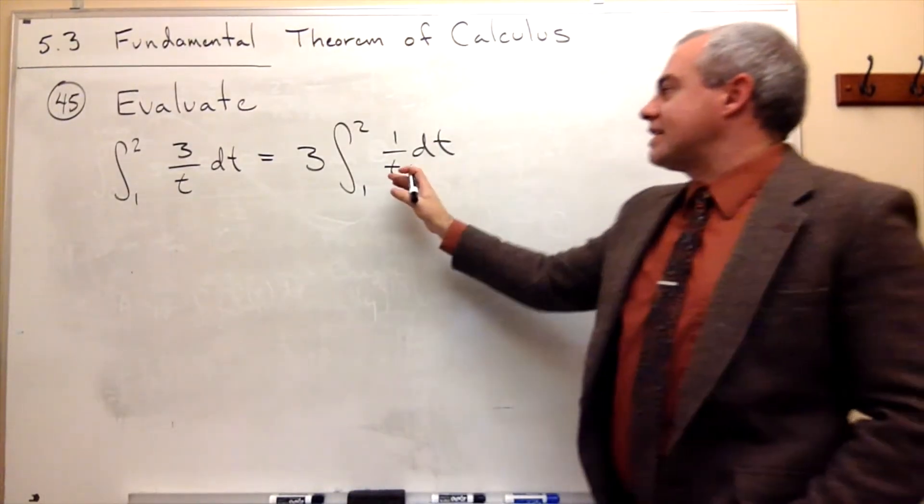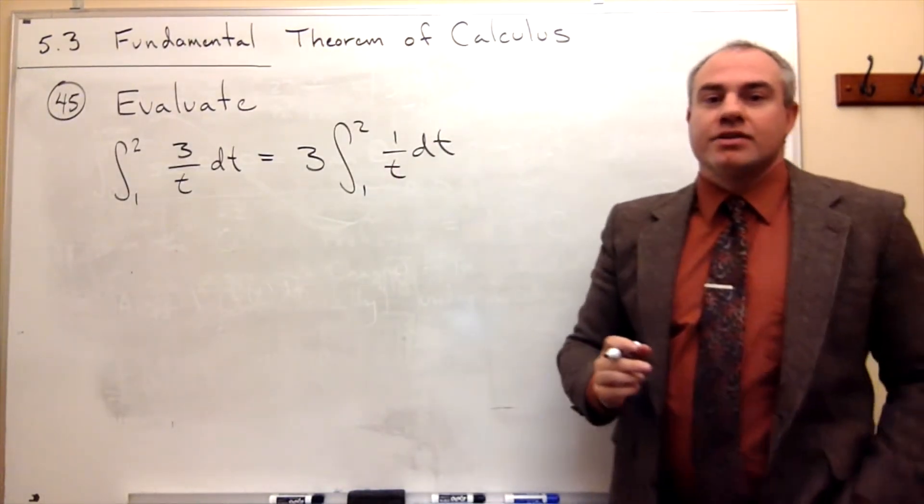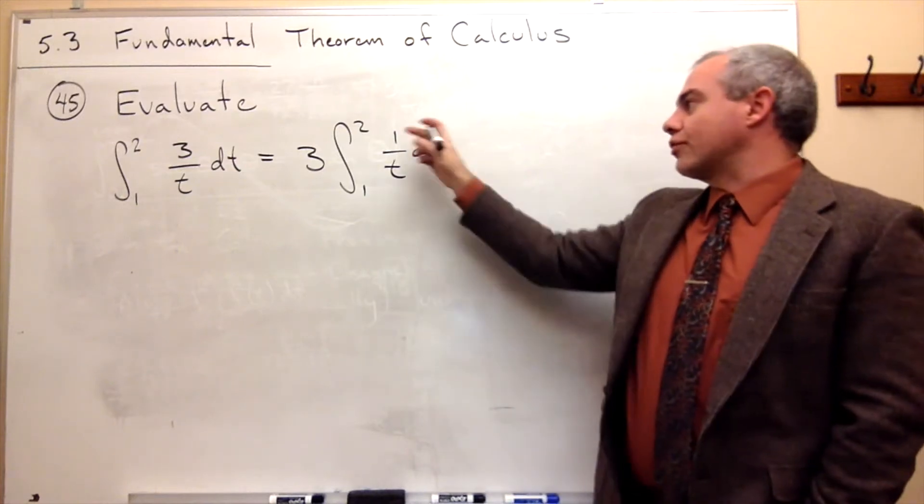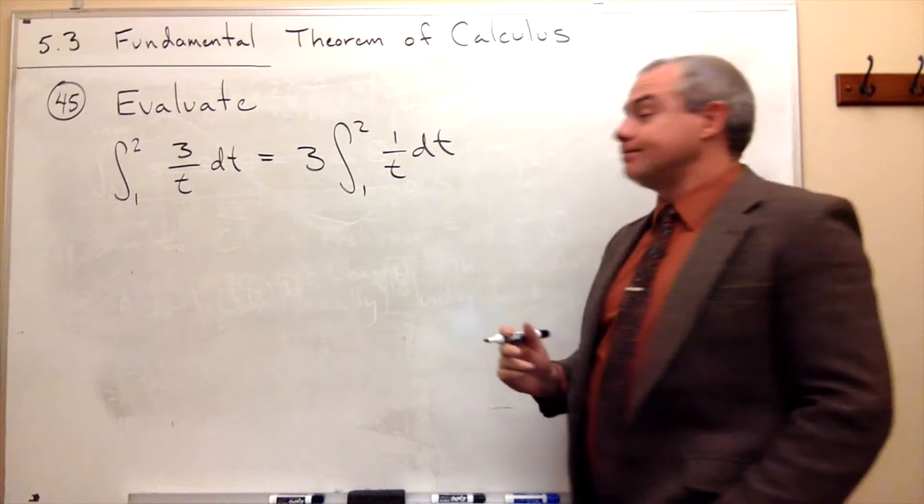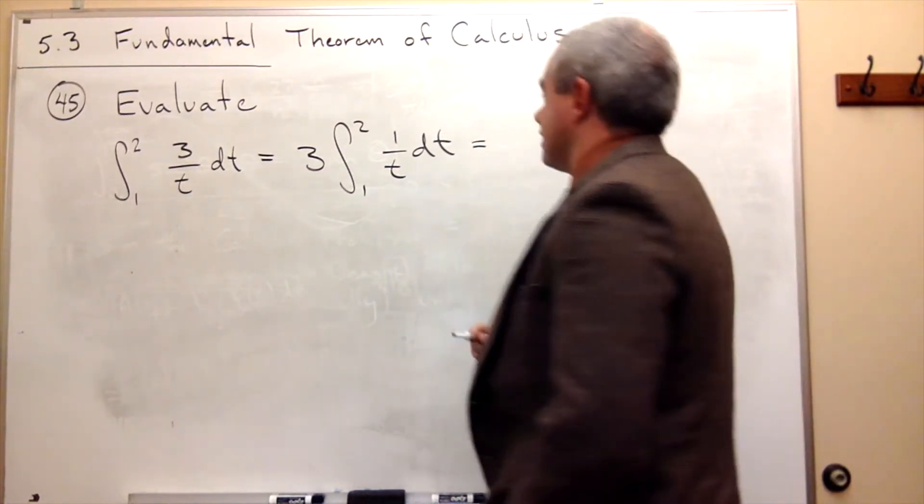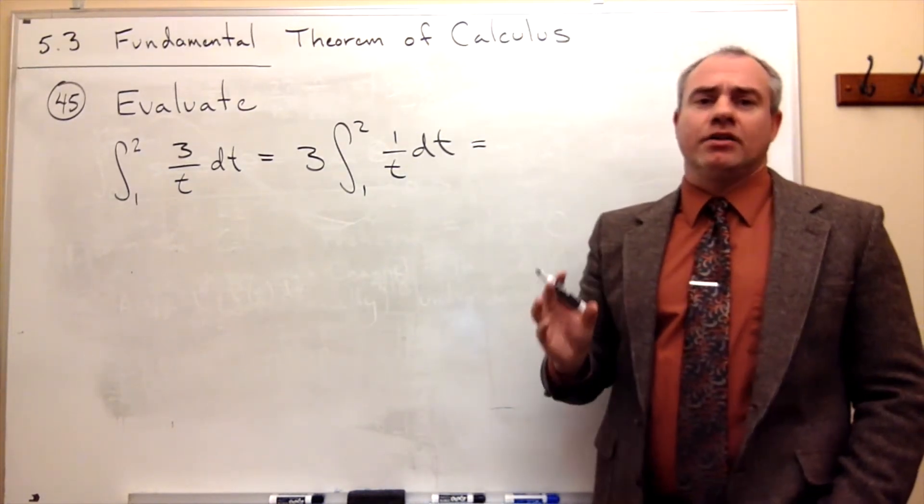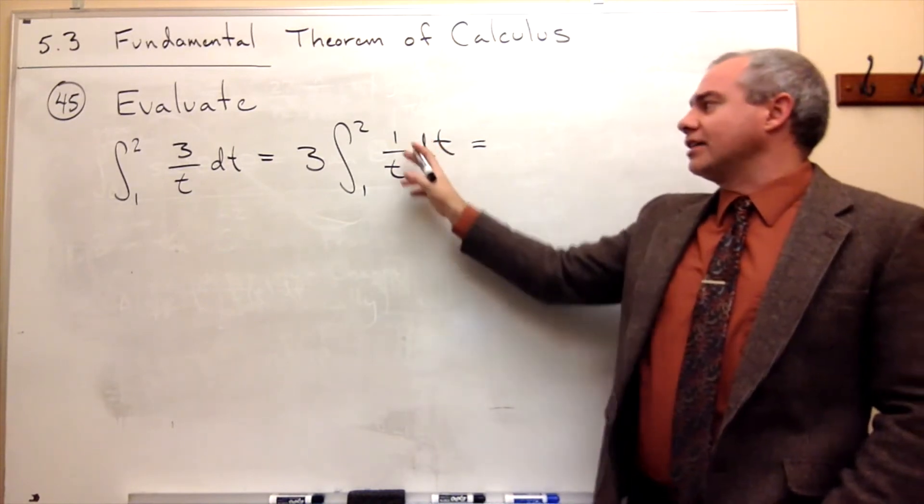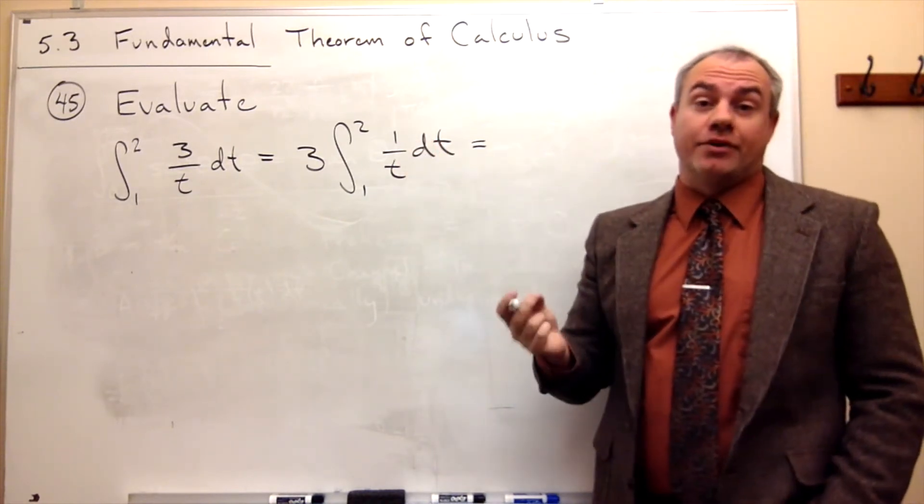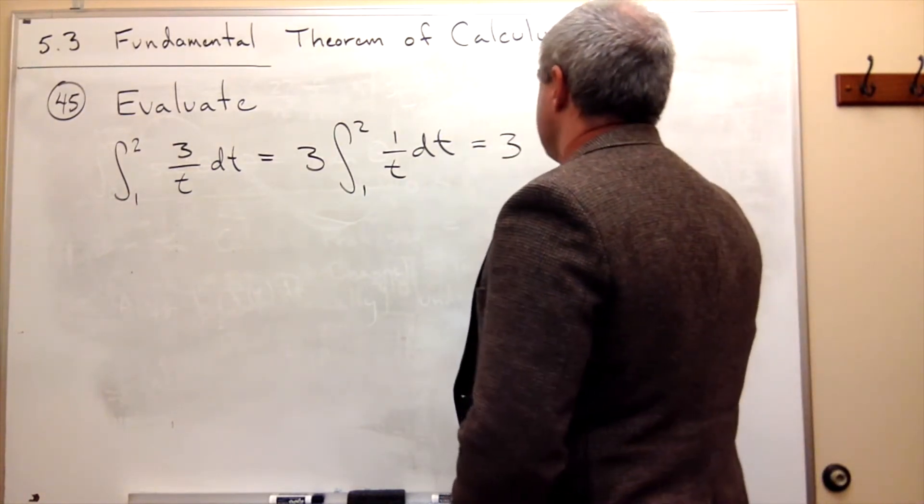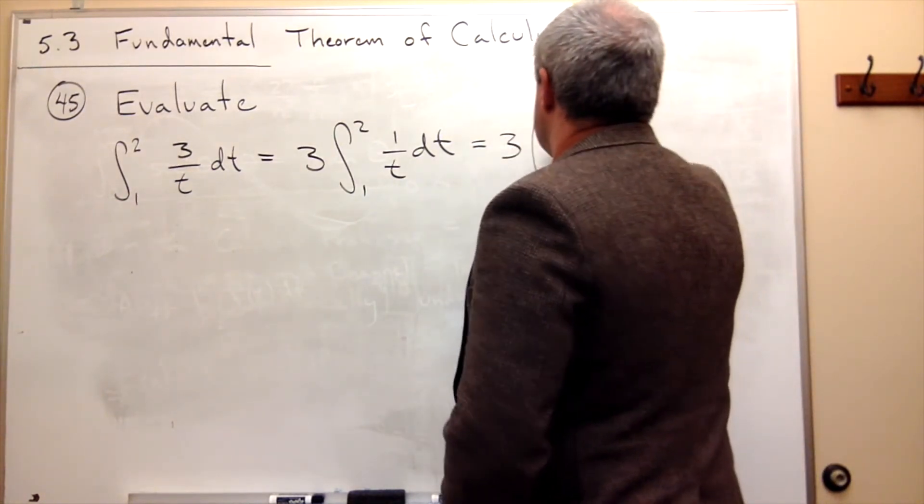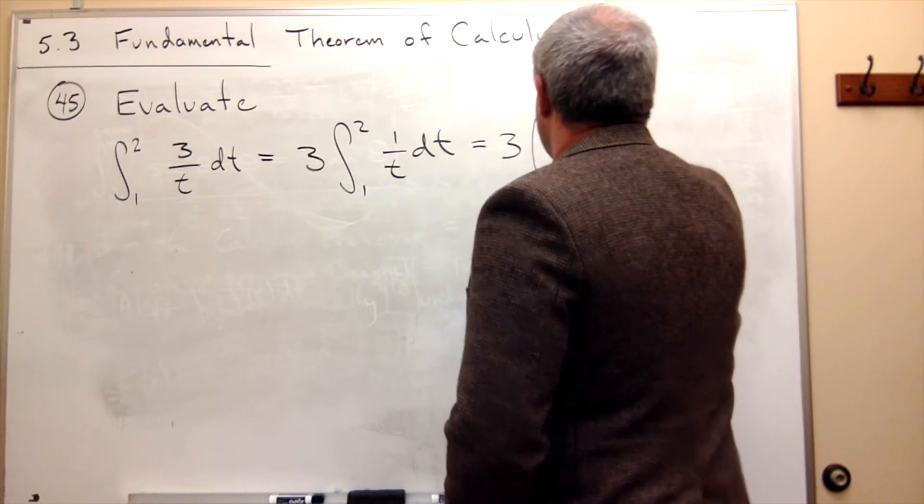All right, now we need to take an antiderivative. So in other words, whose derivative is 1 over t? Well, the answer to that is ln of t. And actually we have to be a little bit careful, it should be ln of the absolute value of t. Okay, so it's 3 times ln of t,